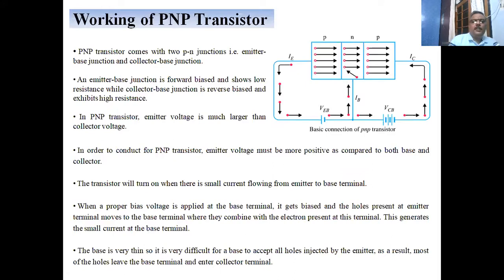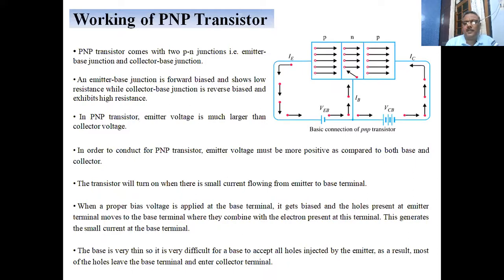Now, how does the PNP transistor work? The PNP transistor has two PN junctions: one is the emitter-base junction and the second is the base-collector junction. The emitter-base junction is forward biased and shows low resistance, while the collector-base junction is reverse biased and shows high resistance.